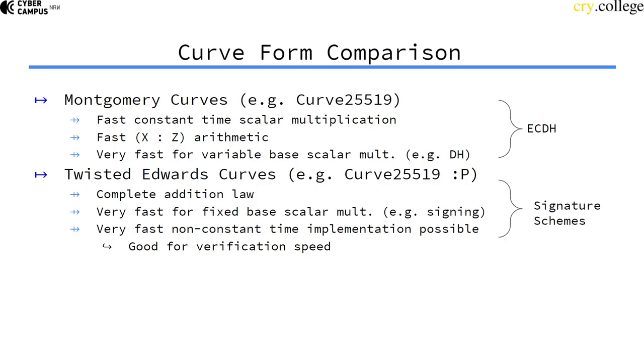So in conclusion, Montgomery curves are better for elliptic curve Diffie-Hellman and variable base scalar multiplication, and twisted Edwards curves are better for signature schemes because they can be faster in fixed base scalar multiplication.